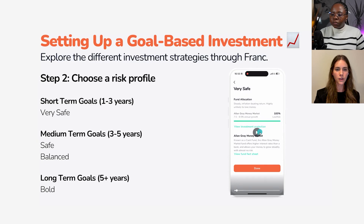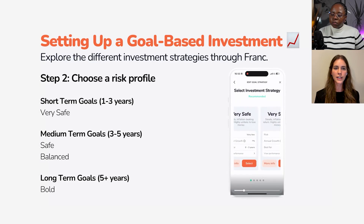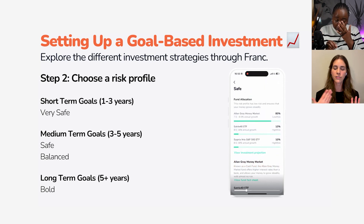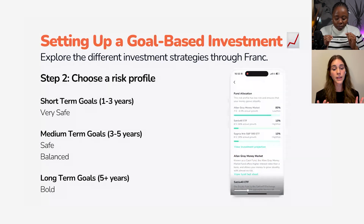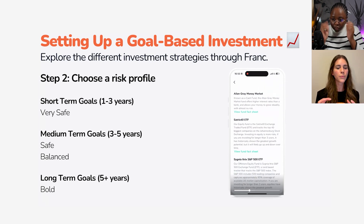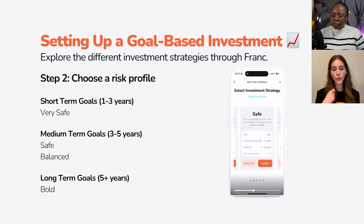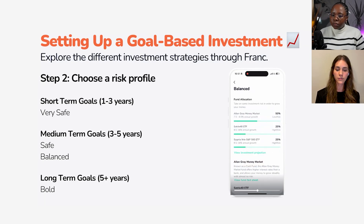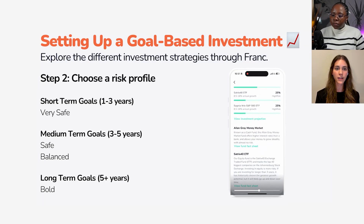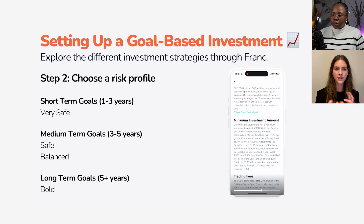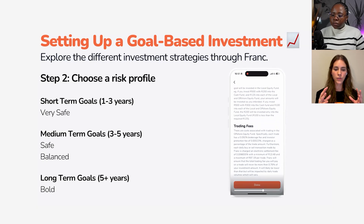We really recommend that you explore the different options. The recommended strategy is based on your timeline, matching your risk to your timeline, but explore what the different options are. When you click on Edit, you can toggle between Very Safe, Safe, Balanced, and Bold — you can even make a custom one. These are combinations of different fund types: a money market fund, a local equity fund which is the Satrix Top 40 ETF, and an offshore equity fund which is the Sygnia Satrix S&P 500. It's the combination of these that makes up the different risk profiles.